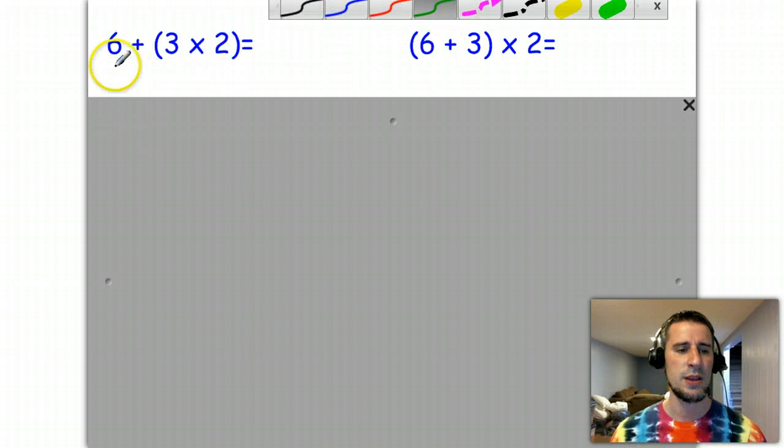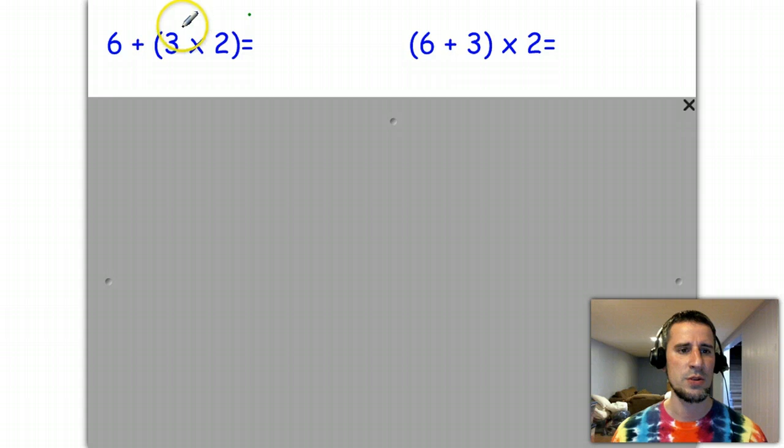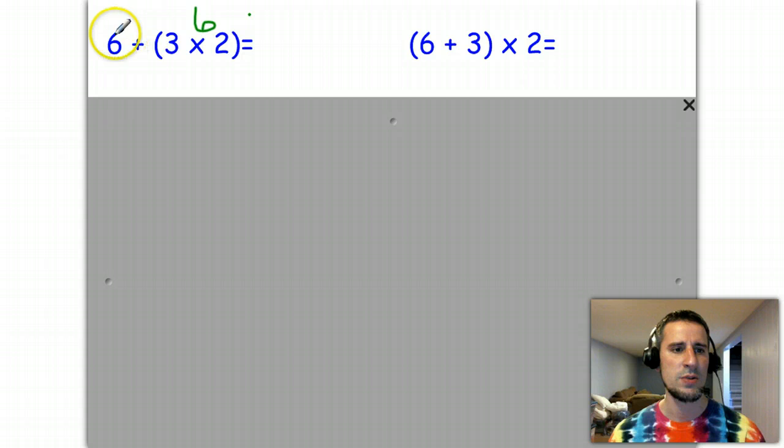So if we take a look at this problem here, 6 plus 3 times 2, notice I have to do the parentheses first. I'm going to be doing the 3 times 2, which equals 6, and now I can do 6 plus 6, which would give me 12.